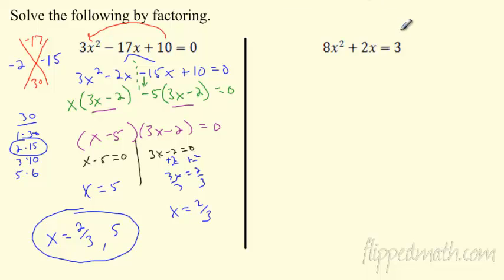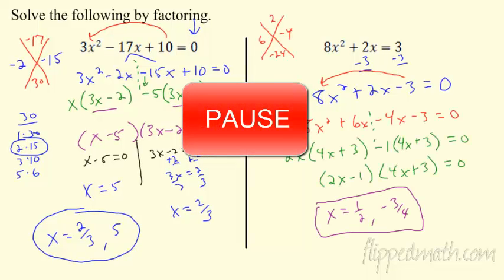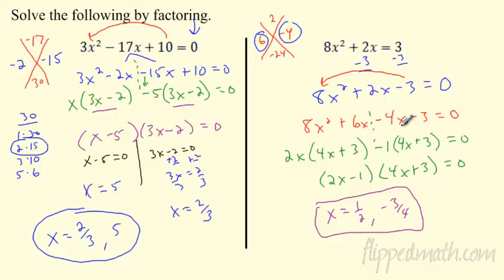One more — I'm just going to get you started. We've got to set these equal to 0, and we want the x squared term to be positive. Pause it, try to factor it all by yourself, follow the steps, and see if you can solve it. Your two factors should have been 6 and negative 4. Depending on how you wrote it, you end up with 2x minus 1 times 4x plus 3 — order doesn't matter. When you solve them, you get x equals 1 half and x equals negative 3 fourths. Those are your two solutions.